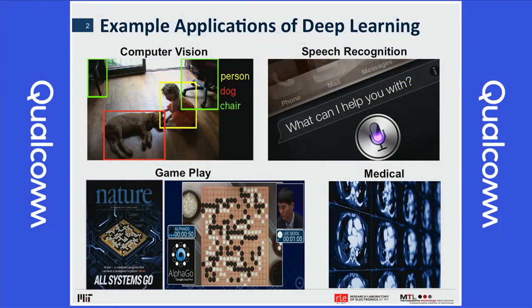Deep learning is very prevalent in a wide range of applications, beginning with things like computer vision and speech recognition that are widely used today, and also for things like gameplay. There was a lot of press back in early 2016 about whether deep learning could overcome one of the grand AI challenges — playing the game of Go. The number of possible moves in Go is more than the number of atoms in the universe, so you can't do a brute force search. Deep learning beat the world champion at Go in March 2016. More recently, people are looking at emerging applications like medical diagnostics, medical imaging, and genomic sequencing.